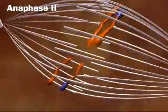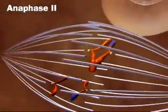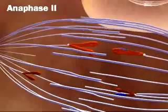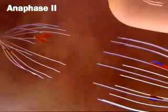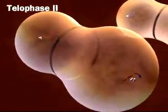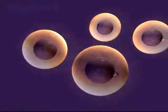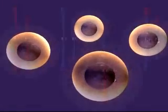In anaphase II, the chromatids finally separate. Remember that they stayed together in anaphase I. At the end of meiosis, we have four nuclei, each with half the chromosome number of the original nucleus. Each differs genetically from the others.